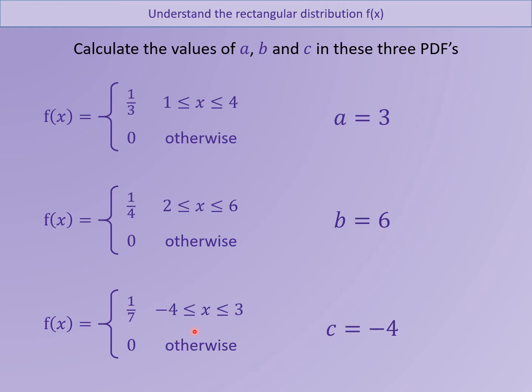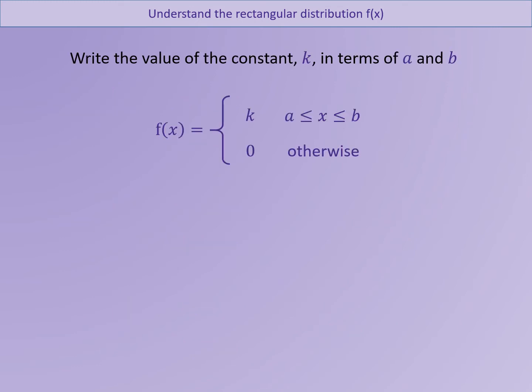Well done if you figured all those out. It's not I wouldn't say it's overly difficult, but it is important to recognize that these are what we call rectangular distributions. Because if you plot any of these PDFs just here, then what you're going to end up with is just a nice simple rectangle. One that goes across with the probability of a third from one to four.